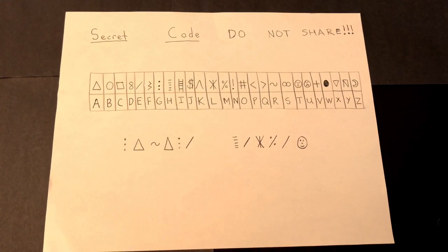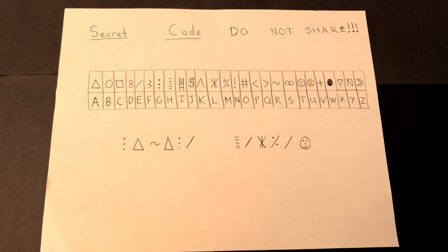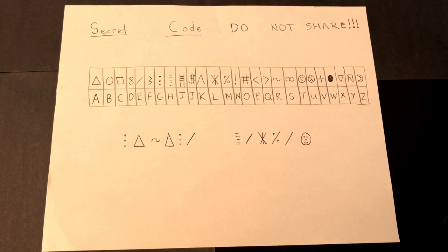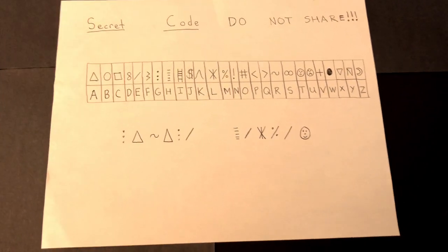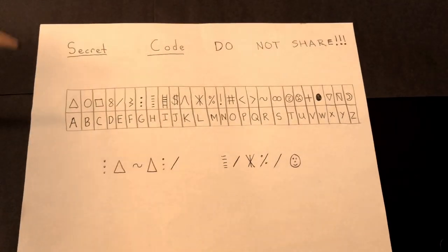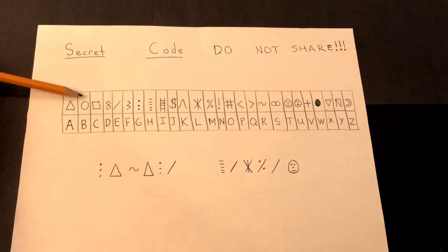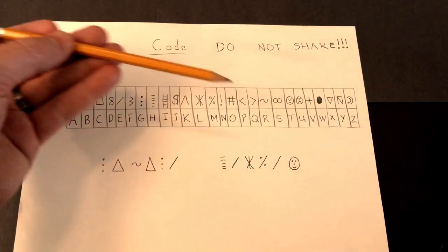This is an alphabet code. As you can see, each letter of the alphabet corresponds with a shape. The letter A is a triangle, B is a circle, and on through Z.